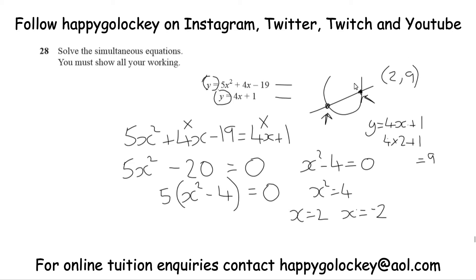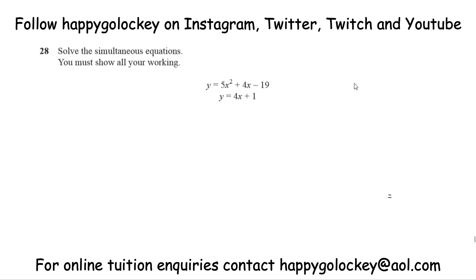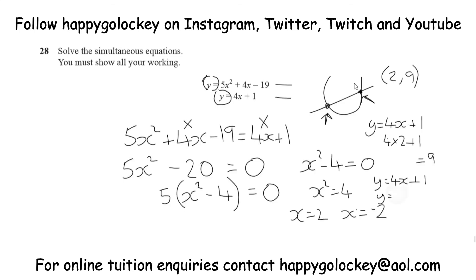What about when x is minus 2? Well, if y equals 4x plus 1, then y equals 4 lots of minus 2, that's minus 8, plus 1, and minus 8 plus one back is only minus 7 now. So we get minus 2, minus 7.